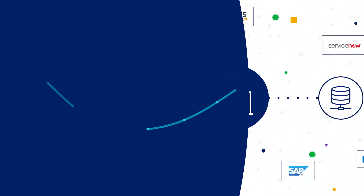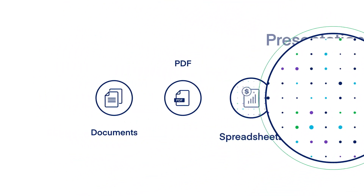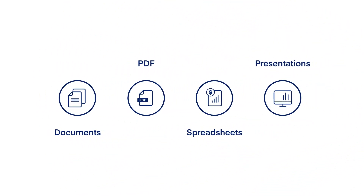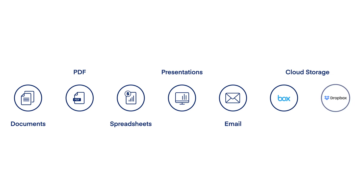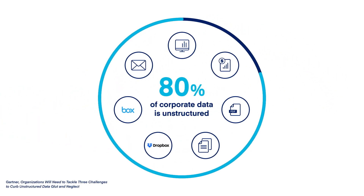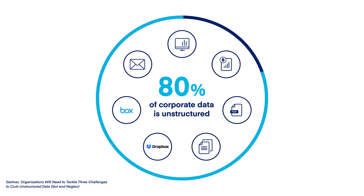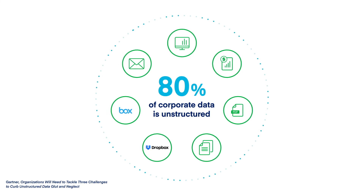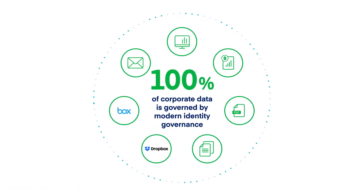More critical is the growth of corporations' unstructured data — the data that we store daily in files, such as documents, PDFs, spreadsheets, and presentations; the data we attach to emails and upload to cloud storage devices such as Box and Dropbox. That data remains today ungoverned, but represents 80% of a corporation's data. A modern identity governance solution must extend to the data stored in files and control access to 100% of a corporation's data.